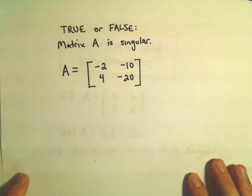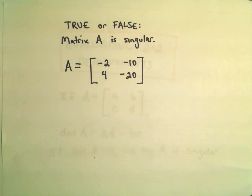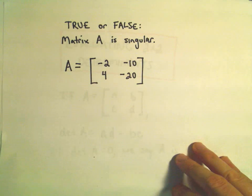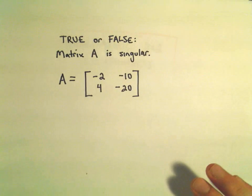So, a couple questions here. True or false? Suppose we want to know if this matrix, negative 2, negative 10, 4, negative 20, is that a singular matrix or not?